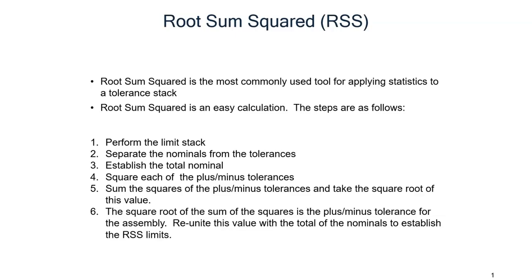The square root of the sum of the squares is the plus-minus tolerance for the assembly. Reunite this value with the total of the nominals to establish the RSS limits.